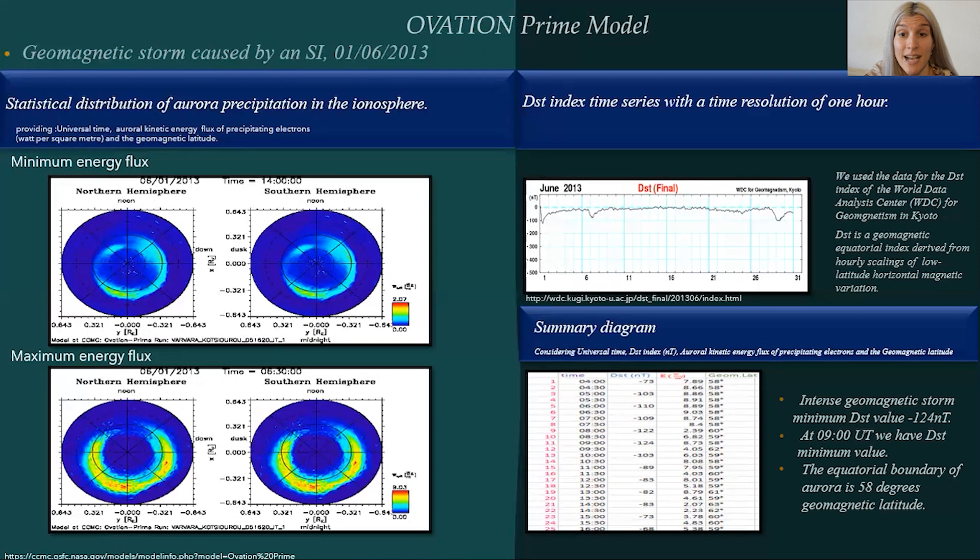The maximum energy flux is 9 Watt per square meter at 680 UT, and the equatorial boundary for aurora is 58 degree geomagnetic latitude, as we can measure from our OVATION Prime diagram with the maximum energy flux.